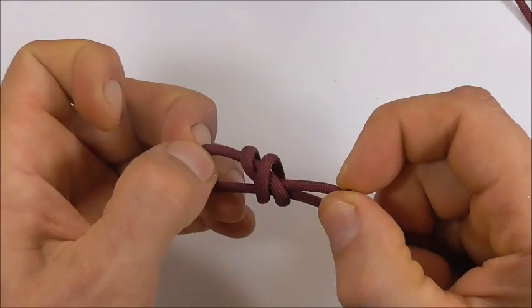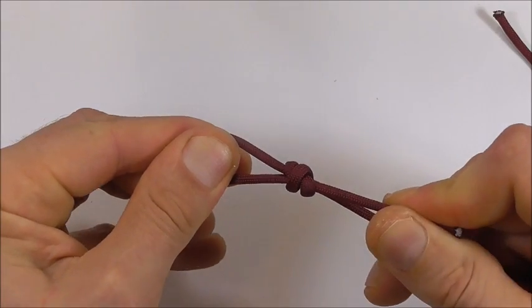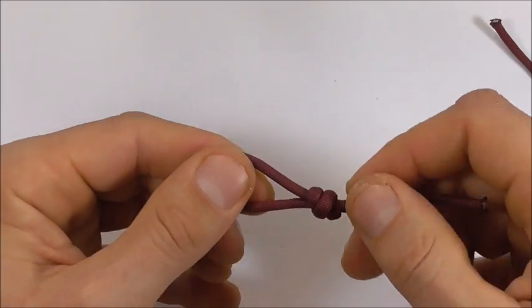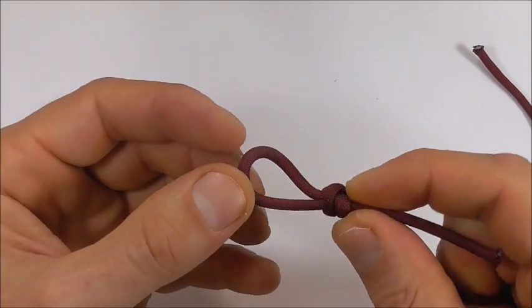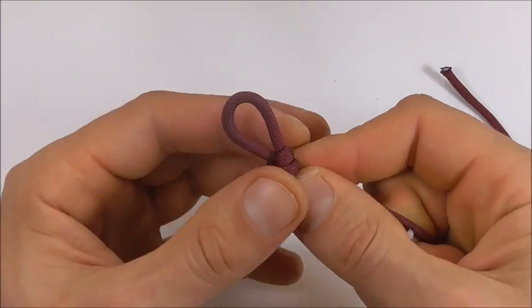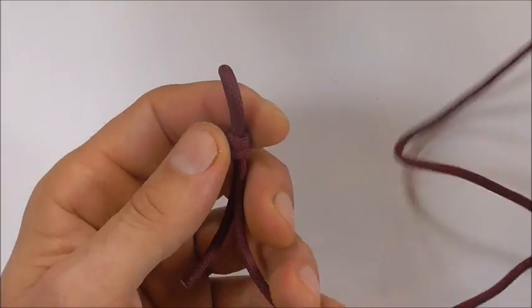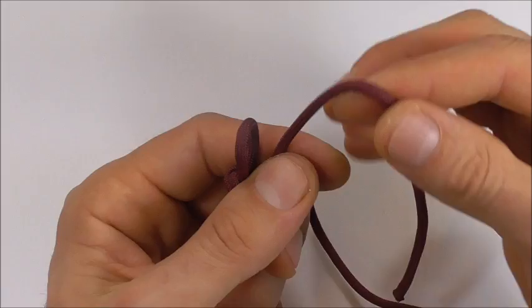Then you can tighten the knot and that just forms a sliding noose. Next, take your other strand.